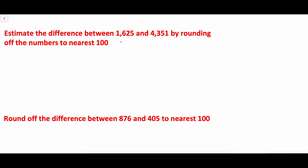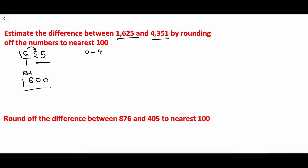First, we need to round off both numbers to the nearest 100 and then find the difference. For 1625, the hundreds place digit is 6, which is our rounding digit. The digit just to the right of the rounding number is 2, which is between 0 and 4, so we keep 6 as it is and change all digits to the right to 0. So 1625 is rounded off to 1600.